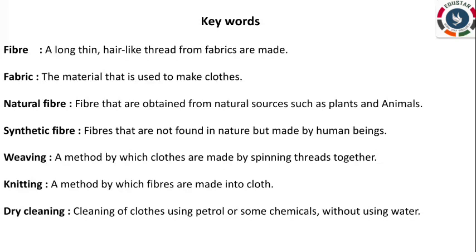Now we will see the keywords from this lesson. Fiber: a long, thin, hair-like thread from which fabric is made. Fabric: the material that is used to make clothes. Natural fiber: fibers obtained from natural sources such as plants and animals. Synthetic fiber: fibers that are not found in nature but made by human beings. Weaving: a method by which clothes are made by spinning threads together. Knitting: a method by which fibers are made into cloth. Dry cleaning: cleaning of clothes using petrol or some chemicals without using water.